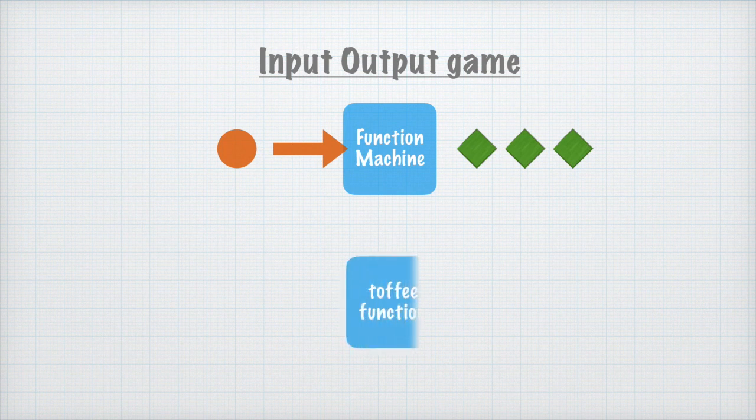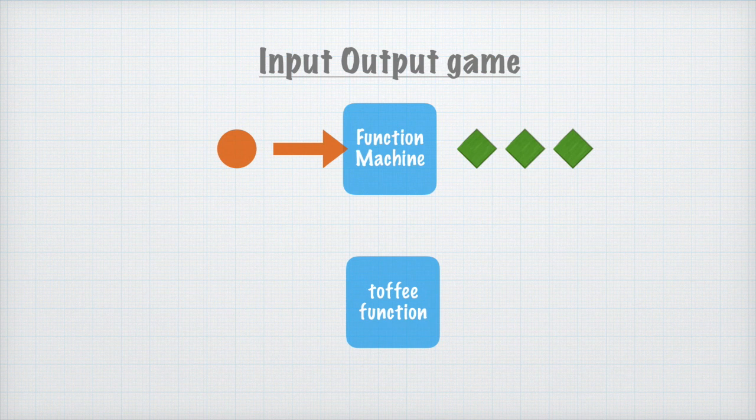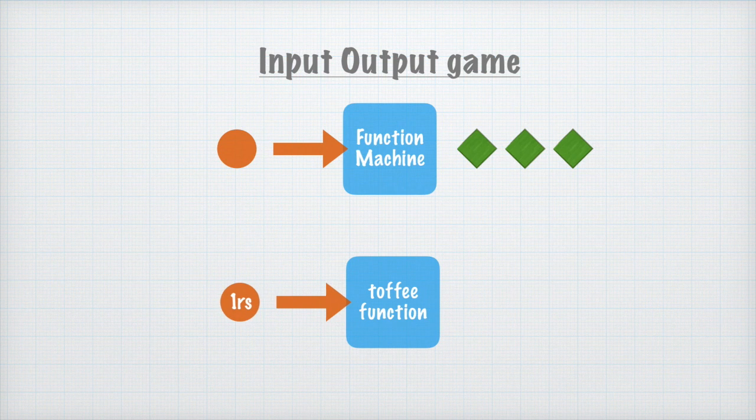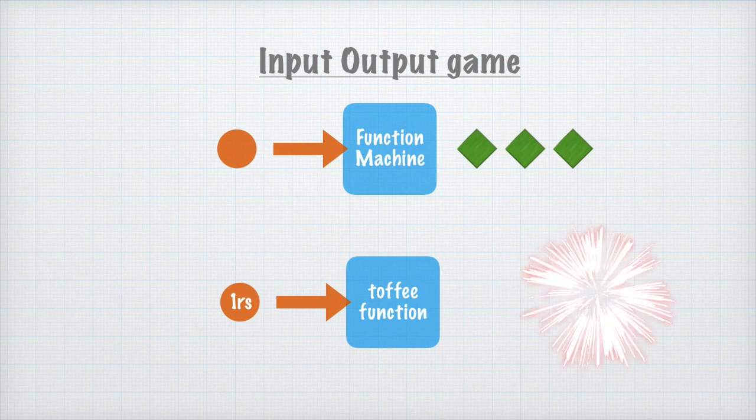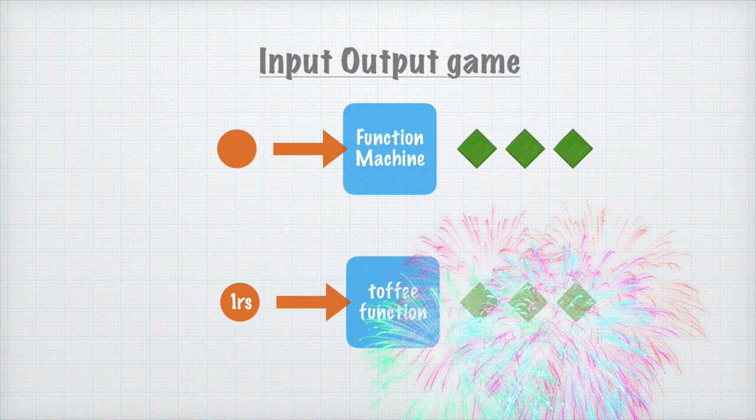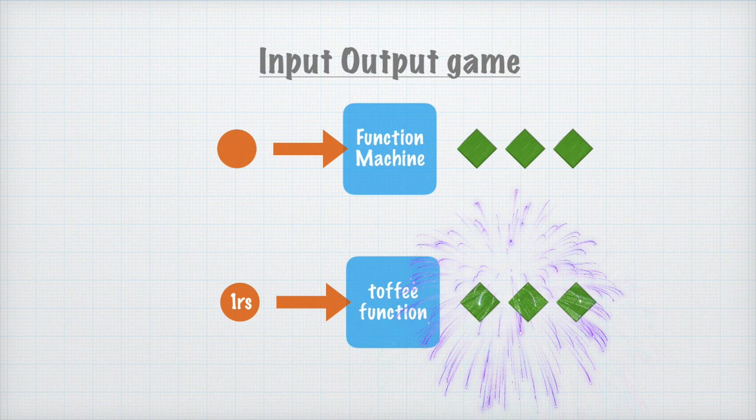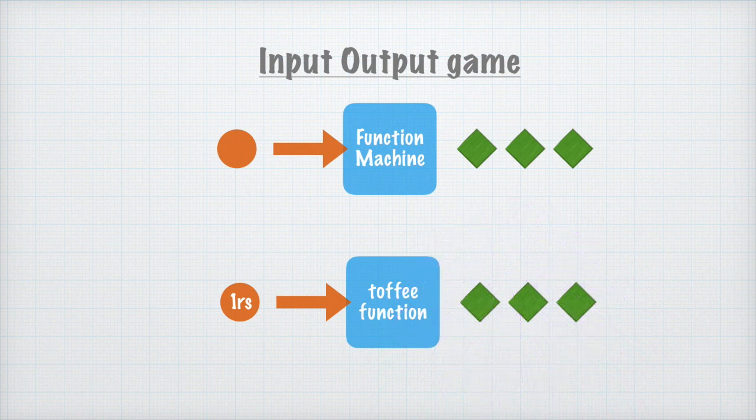Any such idea with an input and an output is a function, and functions are also there in mathematics. Let's start with a very simple toffee function. Think of it as a machine or a shopkeeper which is working as a function. You put one rupee in it and you get three toffees. So your input is one rupee and your output is three toffees. Since you'll be dealing only with numbers, can I also think that the input is one and the output is three?